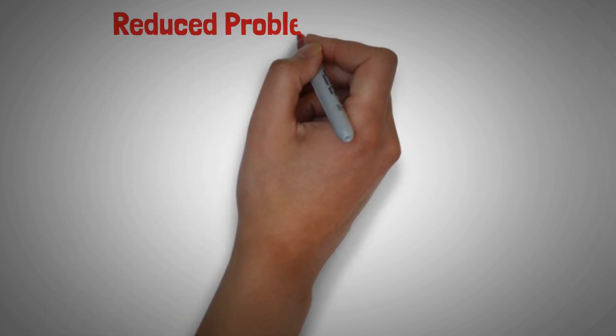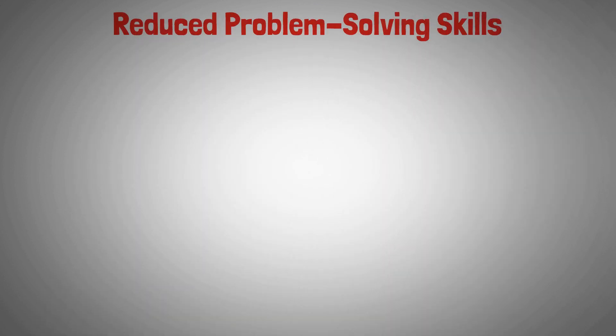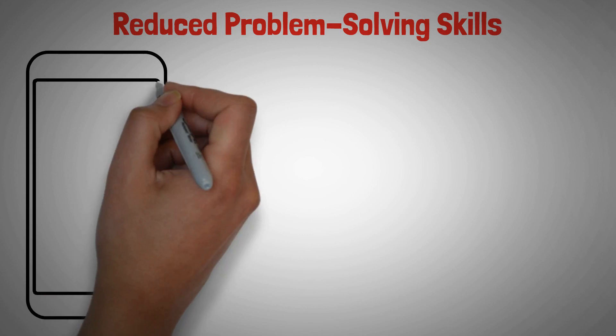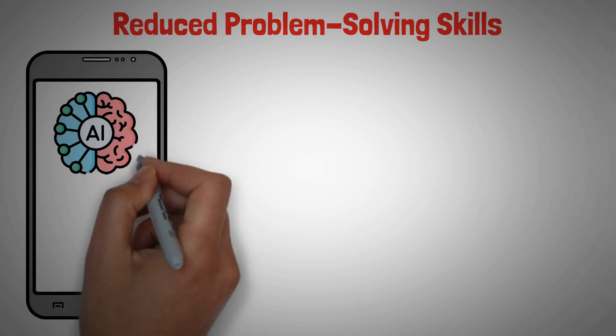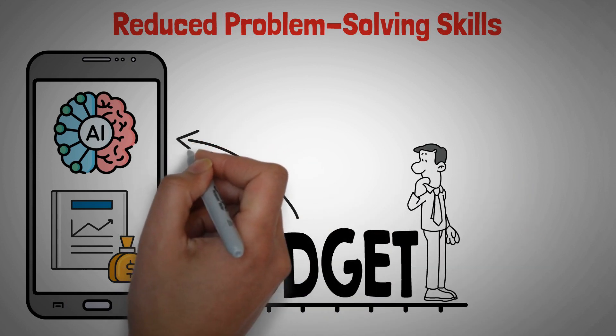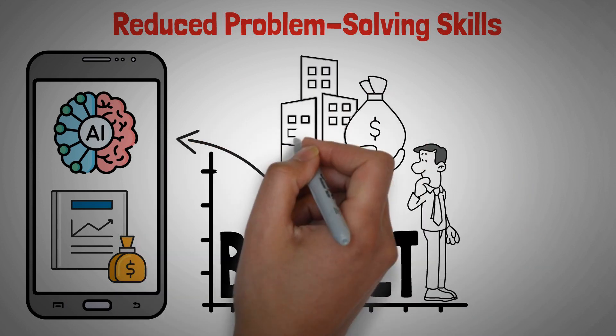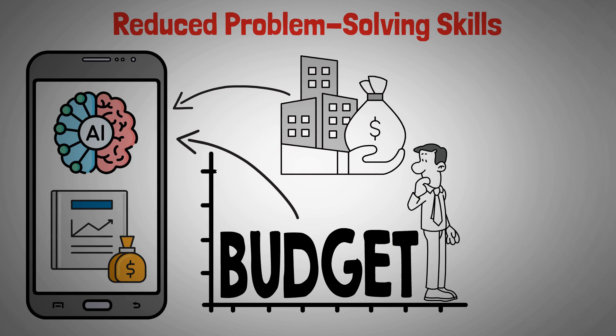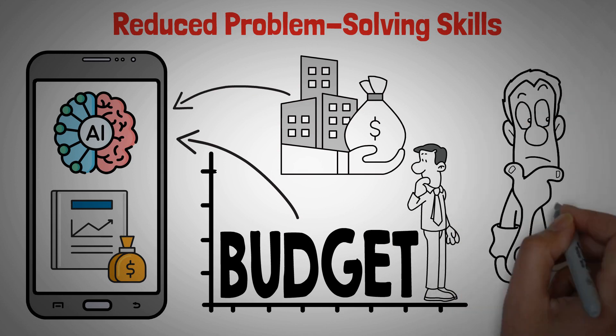Number two, reduced problem-solving skills. Imagine you've got this cool AI app that sorts out all your financial issues. Need a budget? It's got you covered. Investment advice? Just a click away. While it sounds super convenient, there's a flip side.